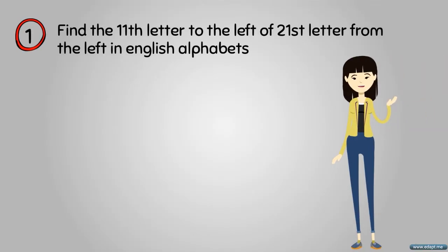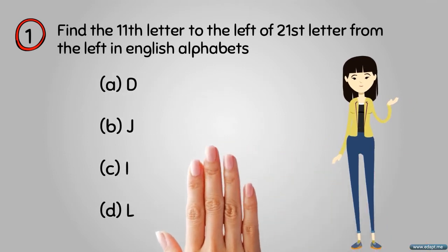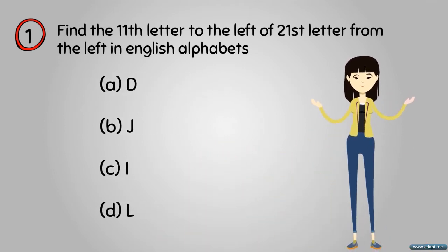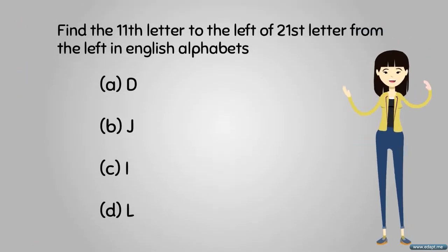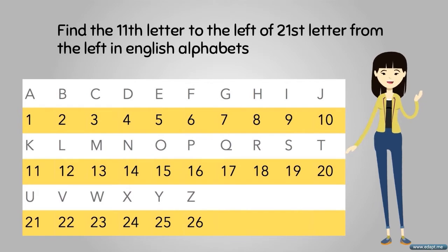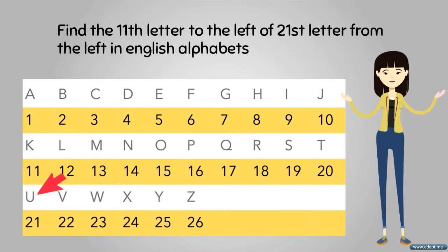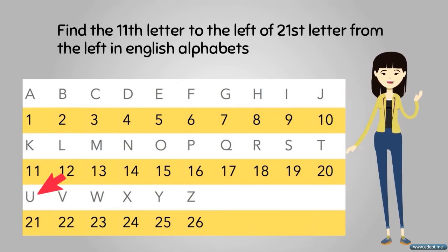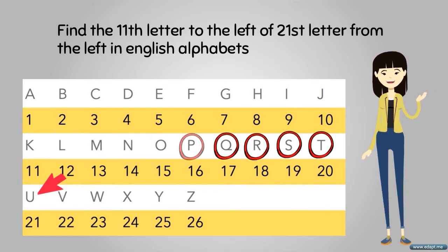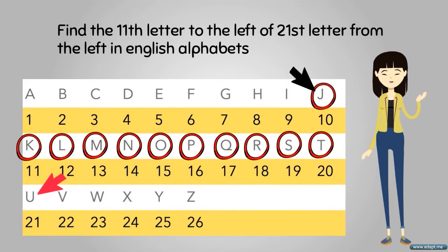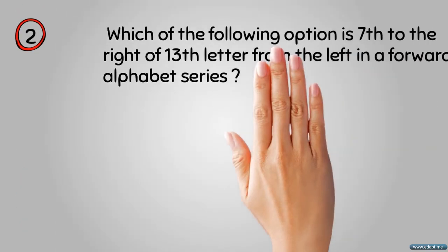Problem number one: find the 11th letter to the left of the 21st letter from the left in the English alphabet. The options are D, J, I, L. First, understand the alphabetic order and place value of each letter. The 21st letter from the left is U. The 11th letter to the left of U gives us J. Hence the answer is option B, J.